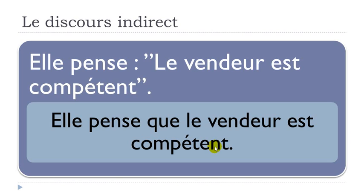I took a simple sentence on purpose to start. The sentence doesn't change that much. Of course you will have to remove the guillemets and the deux points, but in that case the sentence doesn't change much: elle pense que le vendeur est compétent.